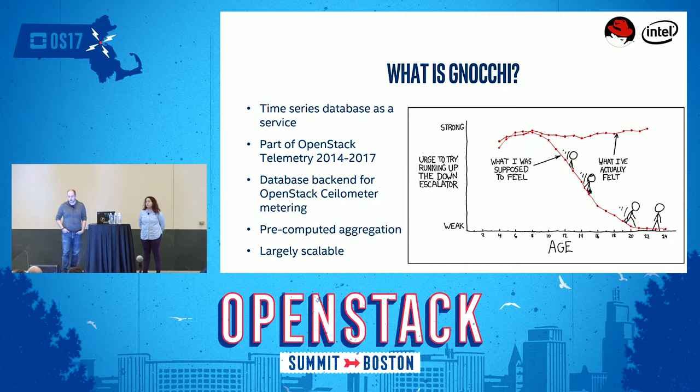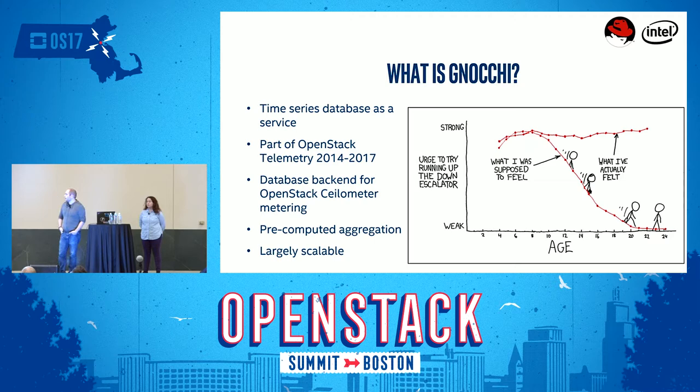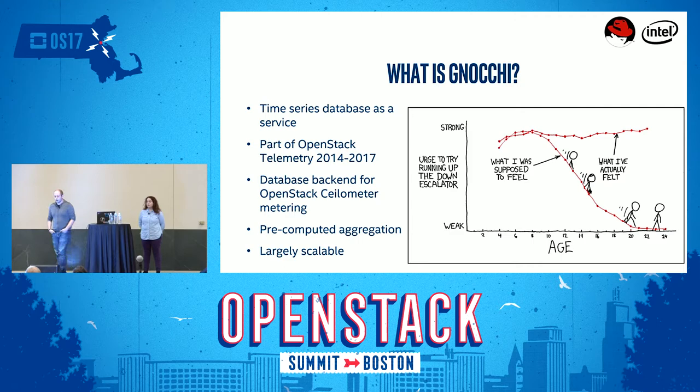Gnocchi is a server with an API that you can use to query it. It started in the OpenStack ecosystem, so it makes sense to have an HTTP REST API. There aren't a lot of time series databases these days exposing a nice, clean HTTP API in the spirit of what OpenStack provides for compute or other services. It stores time series data — basically a set of points with a timestamp and a value — at a very large scale.